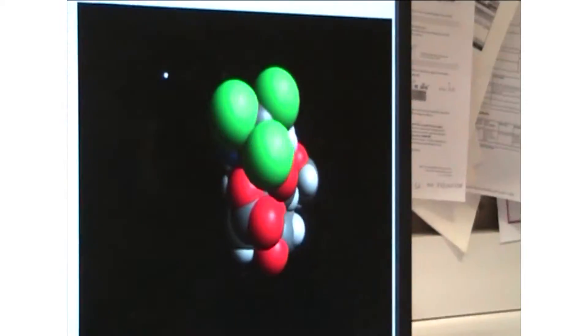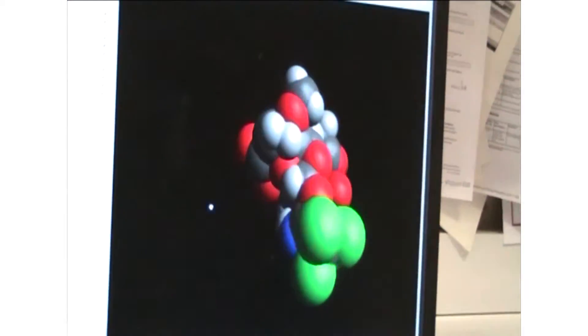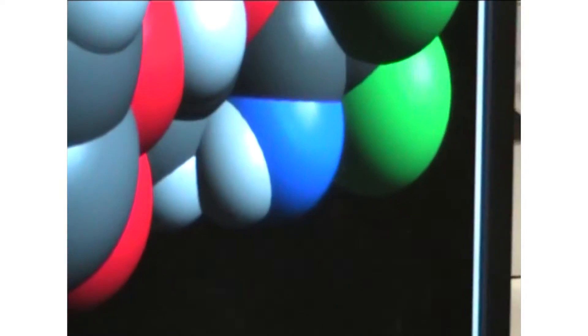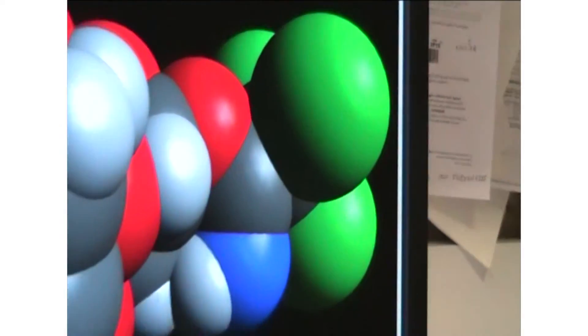Today I've been using some 3D modelling software. The blue bit over here is the nitrogen. The green bits are the chlorine.